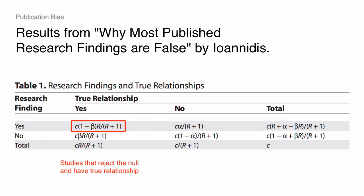This R over R plus 1 term is important — that's the likelihood there is a real relationship. In the case where R is really small, I'm probably not going to find a relationship because there probably isn't one. So out of these C studies, there are going to be very few rejected nulls, because it's like needle-in-a-haystack research if R is 0.1 or 0.05.